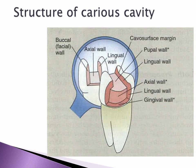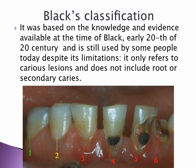Black's classification was based on the knowledge and evidence available at the time of Black, early 20th century, and is still used by some people today despite its limitations. It only refers to carious lesions and does not include root or secondary caries.